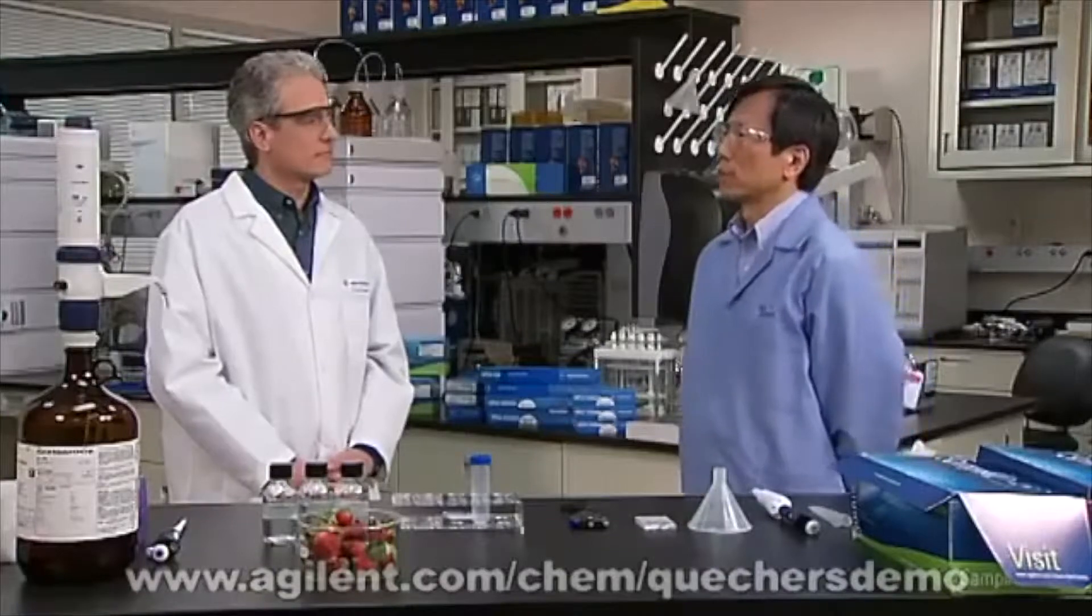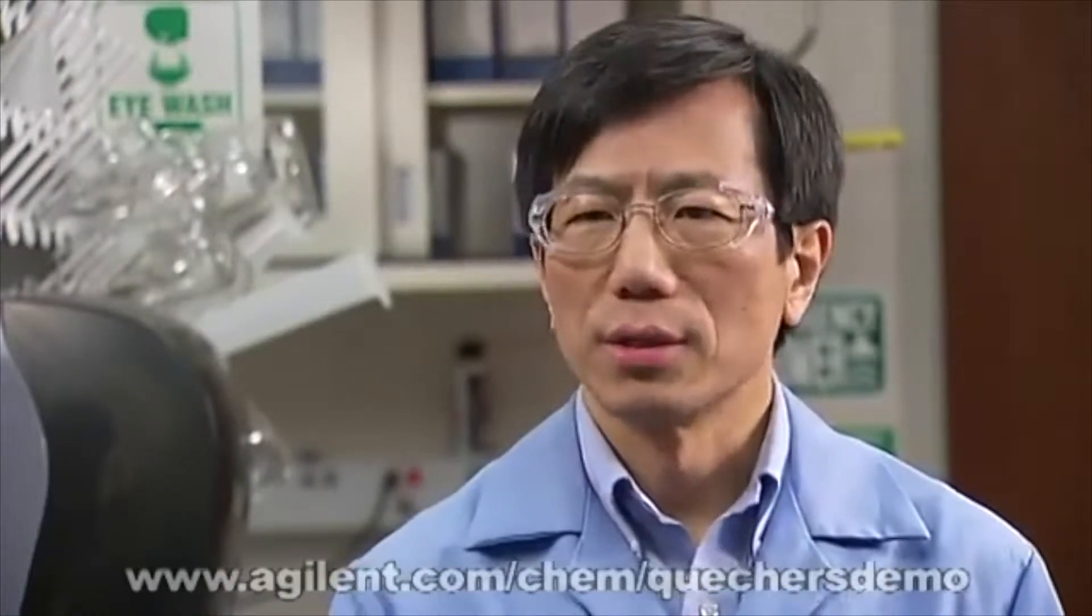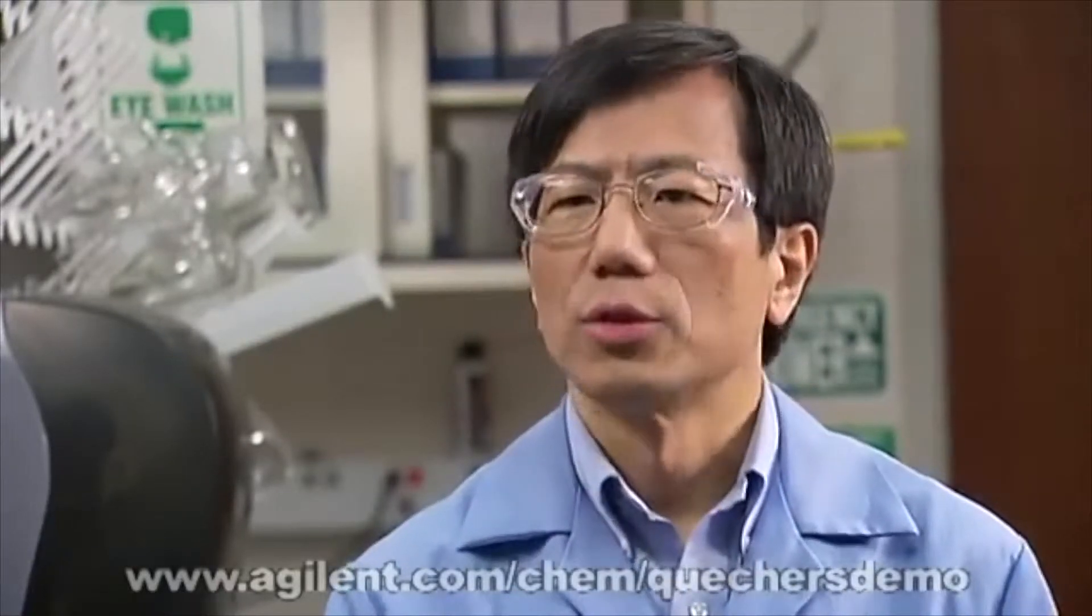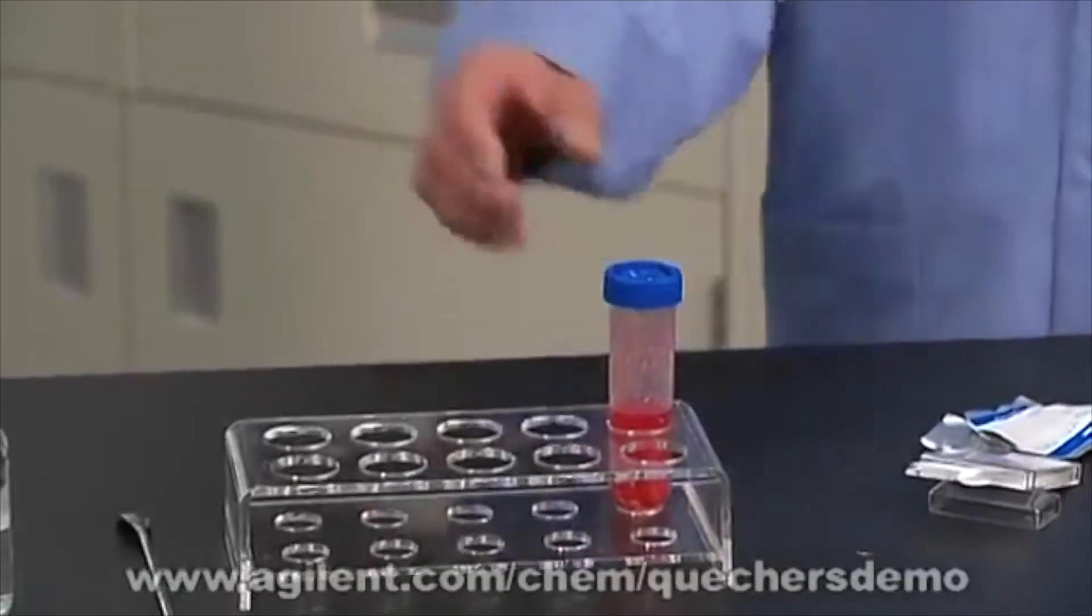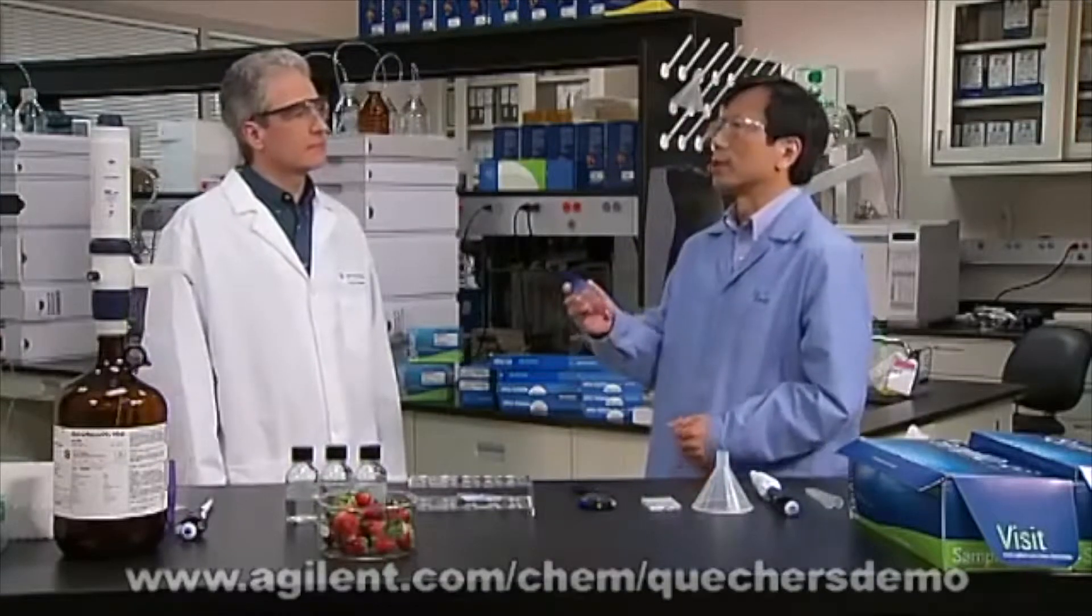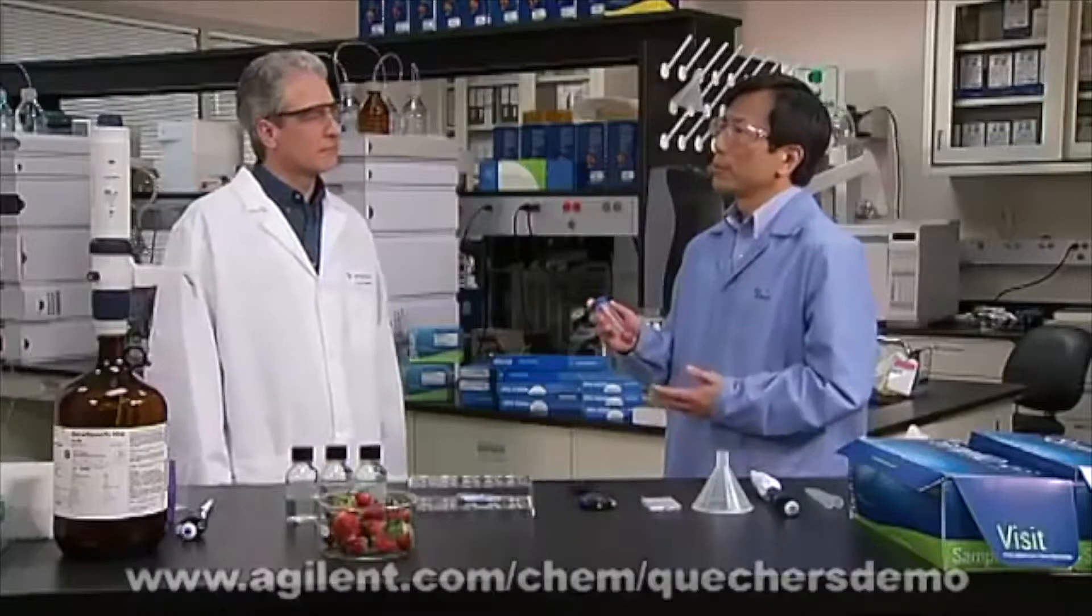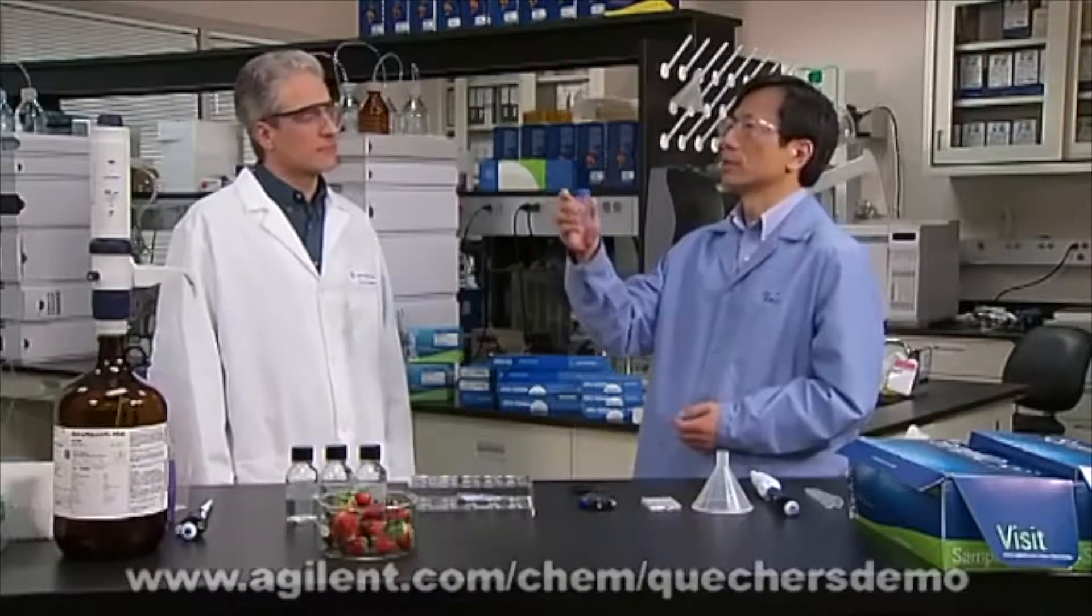I'll take you through the steps now. The first step is to grind up the representative sample, one kilogram or so, so it is consistent. We use a large grinder to prepare the sample I have here. This is the strawberry sample. It is recommended that you use dry ice during the grinding process to prevent the loss of more volatile pesticides. After milling, transfer a subsample to a 50 ml tube immediately to avoid losing any analytes and store the rest.